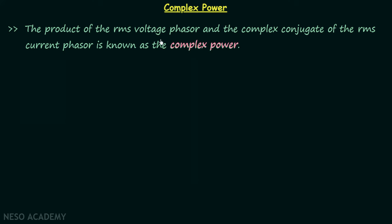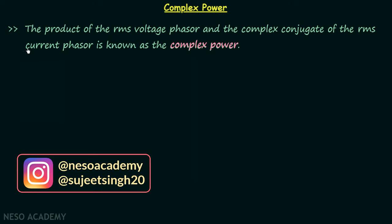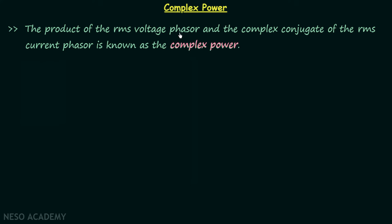The product of the RMS voltage phasor and the complex conjugate of the RMS current phasor is known as the complex power. In this definition we focus on two quantities: the RMS voltage phasor, represented as V_phasor_RMS, and the complex conjugate of the RMS current phasor, represented as I_phasor_RMS with an asterisk. When we multiply these two quantities, we obtain the complex power.